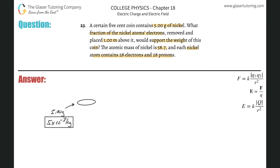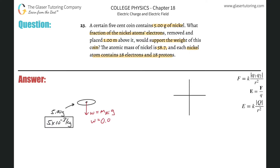Now, if this thing has a certain mass, it has a weight. The weight is pointing down, and we know that weight equals mg — the mass of the nickel times gravity. So we take 5 times 10 to the minus 3 and multiply by 9.8. The weight is about 0.049 newtons. In the free body diagram on the right-hand side, I'll draw a weight vector pointing down with a value of 0.049 newtons.